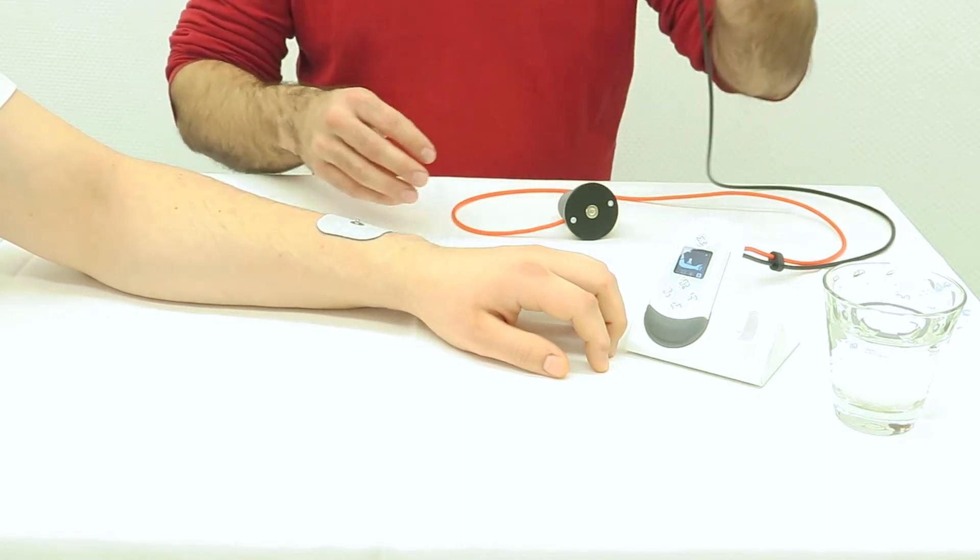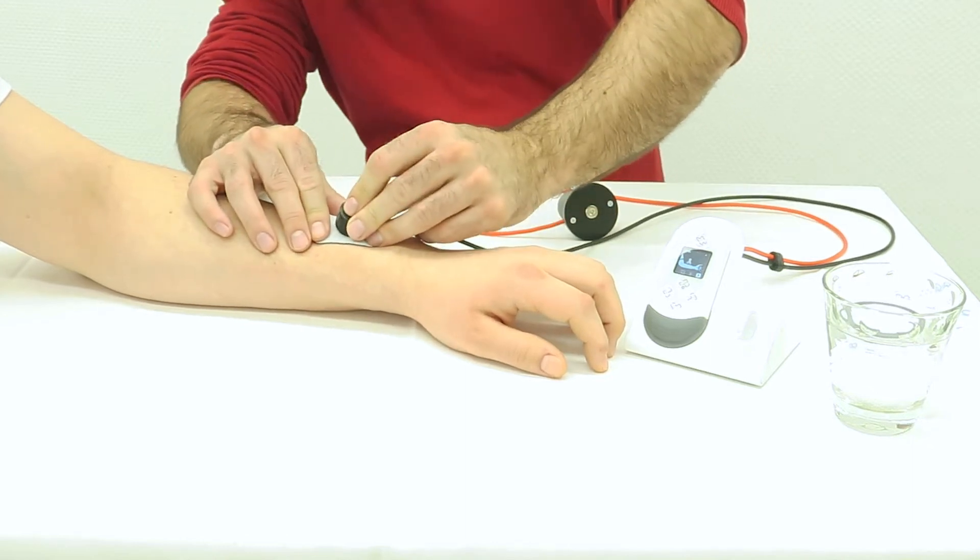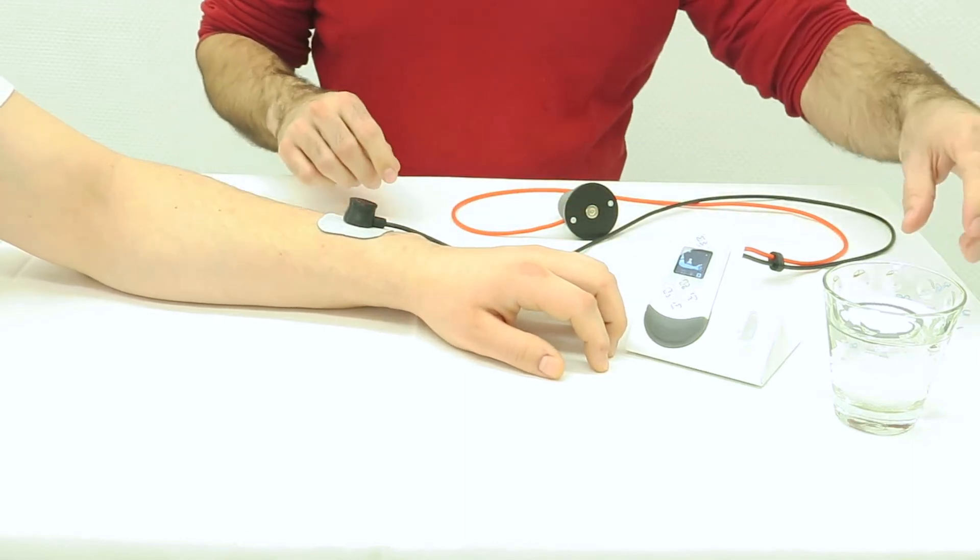Snap the black lead onto the gel electrode. This is referred to as the reference electrode.